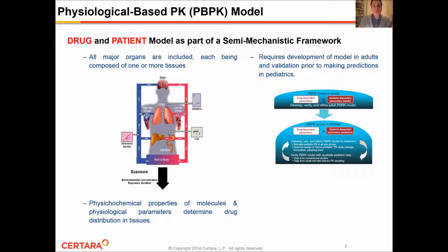A second type of model is referred to as the physiologically based PK model, whereby a drug and a patient model can be constructed as part of a semi-mechanistic framework. These types of frameworks include all major organs, which are described by one or more tissues, as presented in the figure. These models are driven by the physicochemical properties of drugs and the physiological parameters describing the flows across various organs, and require development and validation prior to making predictions in pediatric patients.